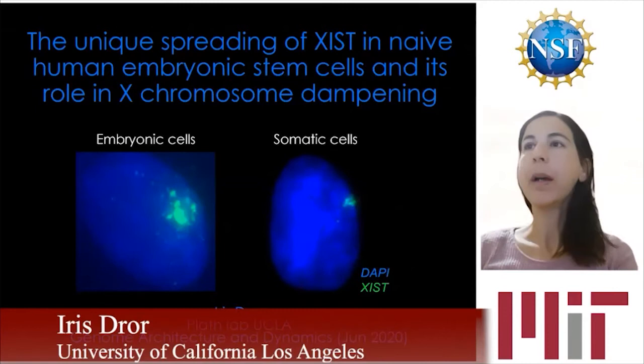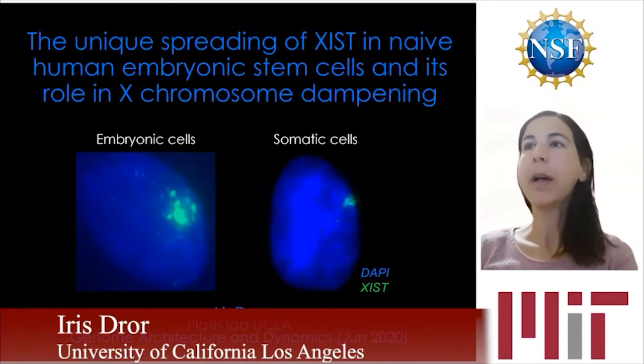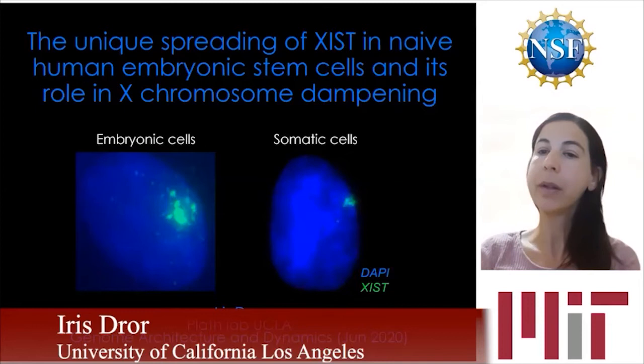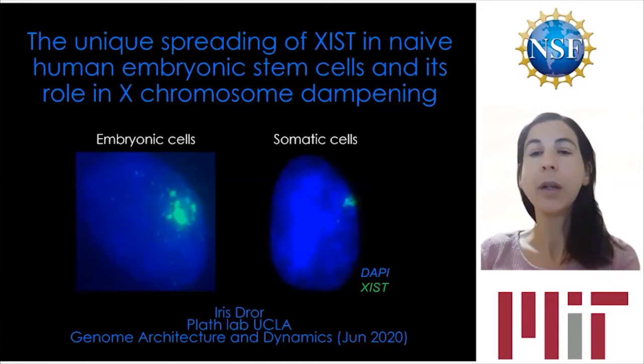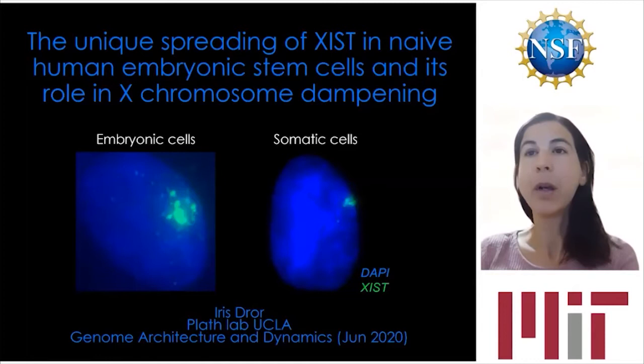I'm a postdoc in the Plath lab, and today I'll show our project done together with graduate students Anna and Satne. This project started from exploring the role of the non-coding RNA Xist in the formation of a repressive nuclear compartment during human early development, and ended up finding very surprising observations regarding the fundamental principles of Xist spreading.